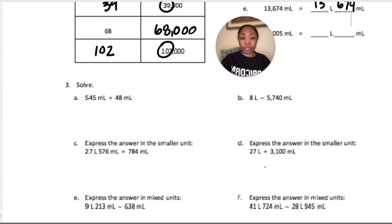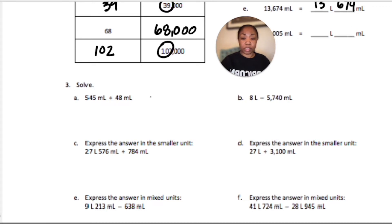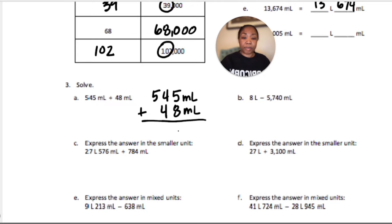Let's go on to number 3. We can use a simplifying strategy, an algorithm, put it in smaller units, or do mixed units — there are some options here. For this first one, I'm going to line up the numbers. They're both already in milliliters, so I'm just going to line the numbers up. 545 plus 48 milliliters. 5 plus 8 is 13, so I write a 3 and regroup 1. That gives 9, nothing to regroup, and 5. So that's 593 milliliters.